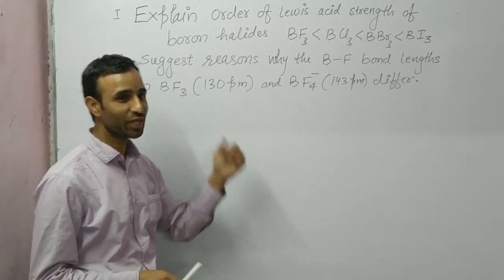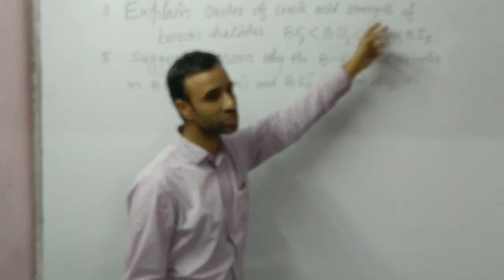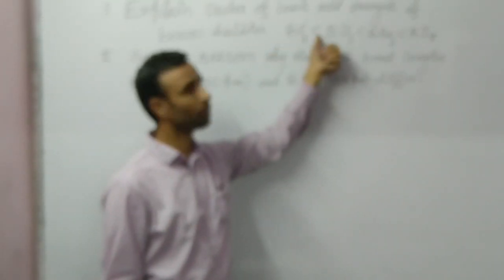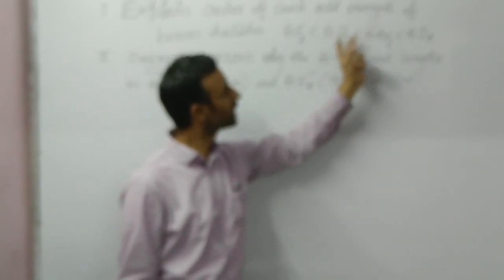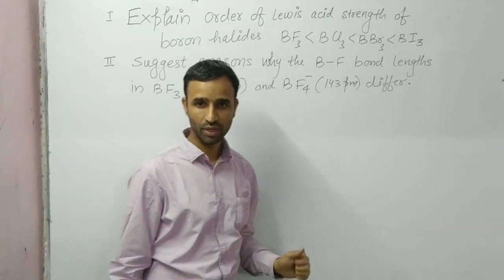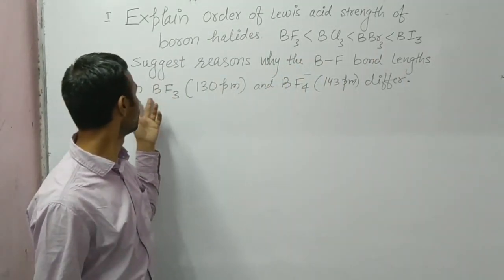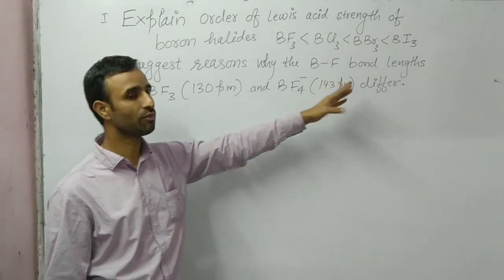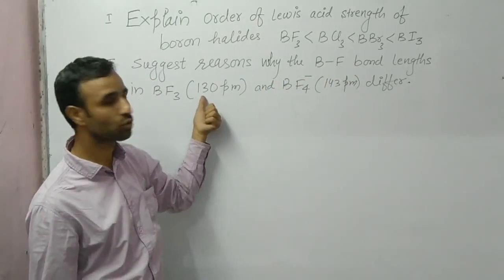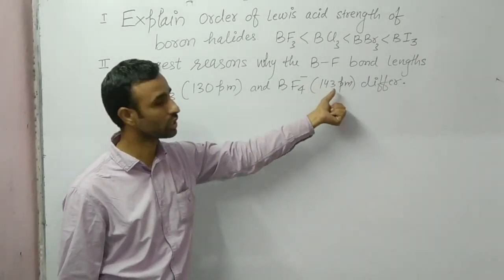Welcome students. Today we will learn two questions. First: explain the order of Lewis acid strength of boron halides, which is BF3 < BCl3 < BBr3 < BI3. Second: suggest reasons why the BF bond lengths in BF3 and BF4⁻ differ — BF bond in BF3 is 130 picometers and BF bond in BF4⁻ is 143 picometers.